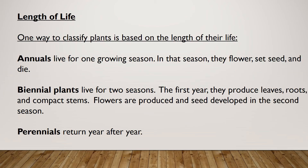One way to classify plants is based on the length of their life. Annuals live for one growing season — in that season they flower, set seed, and die. Biennial plants live for two seasons: the first year they produce leaves, roots, and compact stems; flowers are produced and seed developed in the second season. Perennials return year after year.